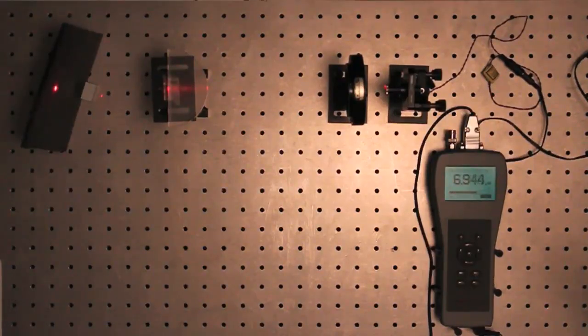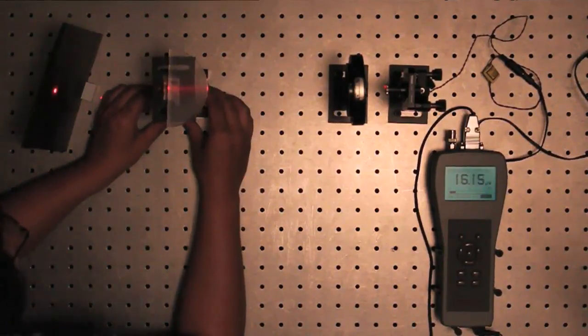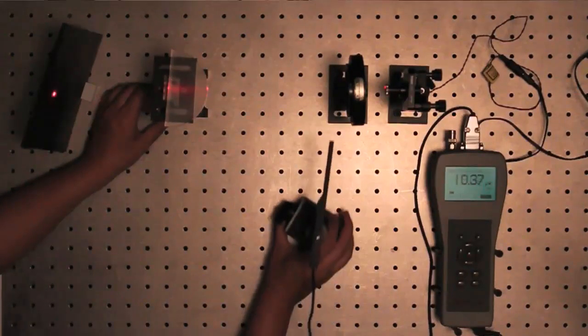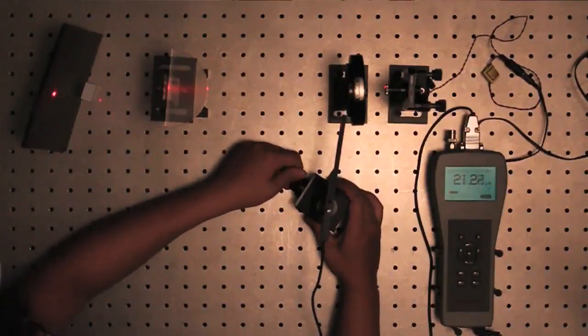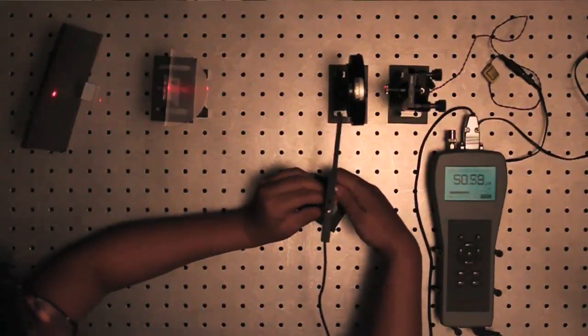Change the angle of incidence by rotating the stage and measure the reflected power. Note the critical angle at which the transmitted power goes to zero. For the TM polarization, there is also a Brewster's angle at which the reflected power goes to zero.